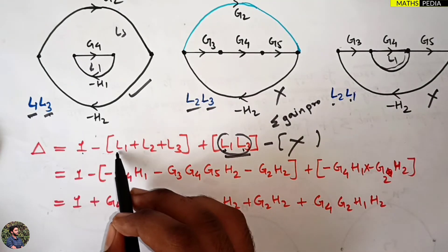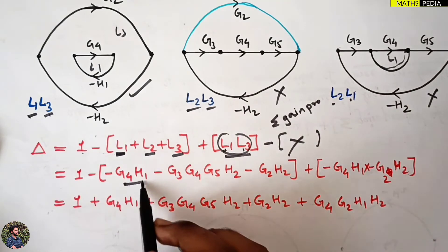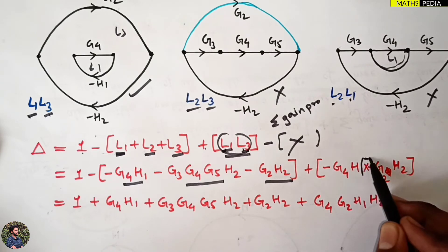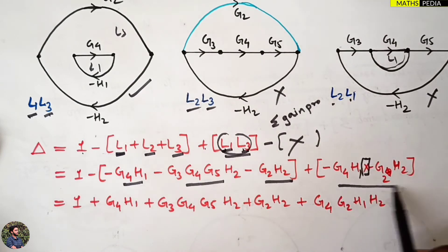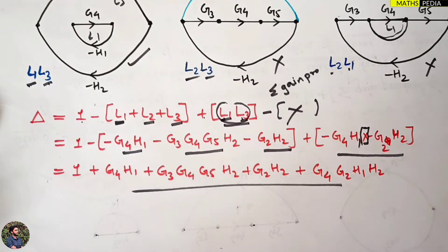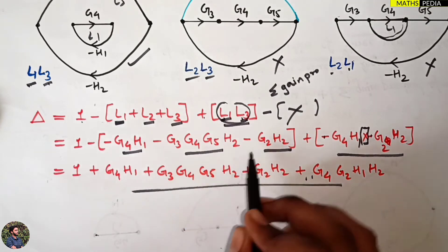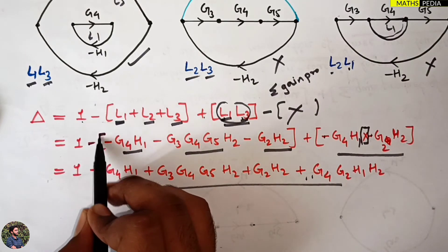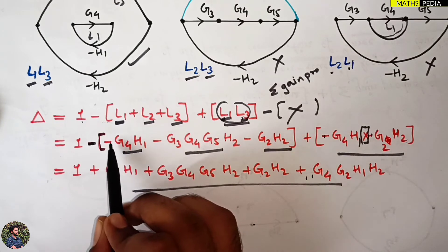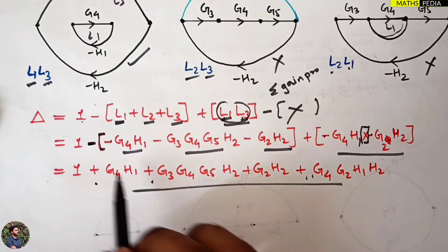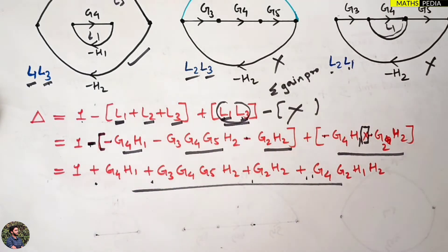So delta equals 1 minus (L1 + L2 + L3) plus L1·L3 product. Substituting the gain values: 1 minus the bracket containing the individual loop gains, plus the product of L1 and L3. Important note: the minus sign outside the bracket changes signs inside — minus times minus gives plus. This bracket handling is very important. This completes step three.